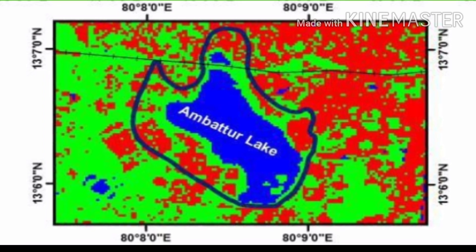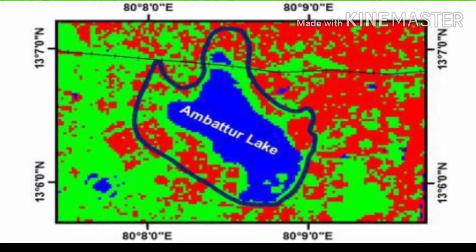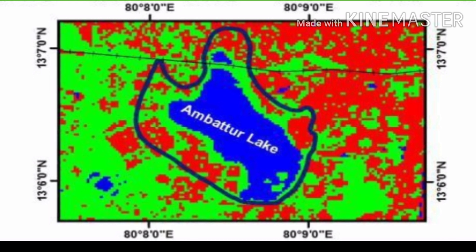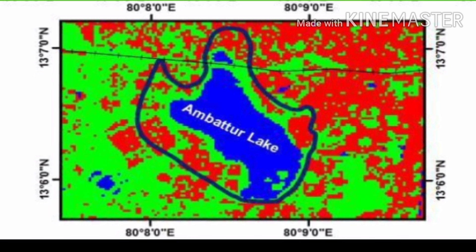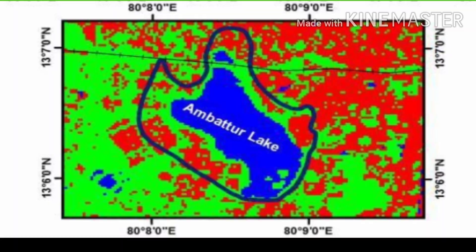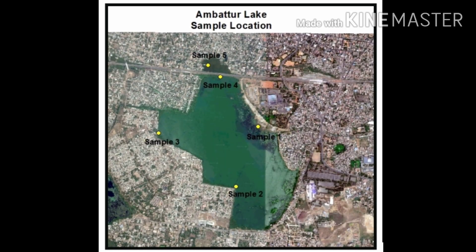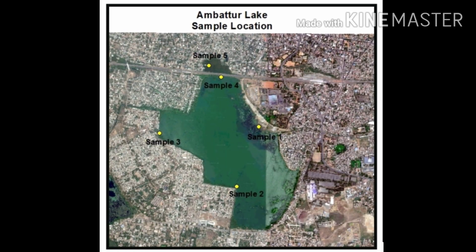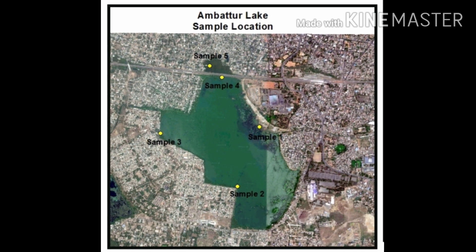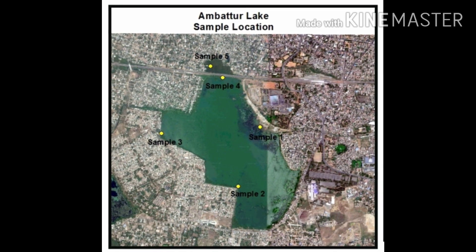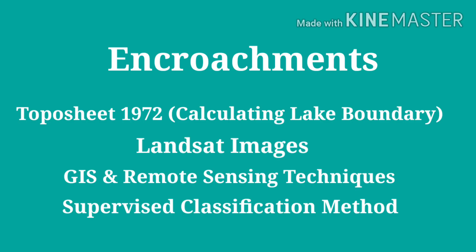To analyze further, the total lake area was calculated using topo sheets, which will be further helpful for calculating the encroachments. We have also collected five water samples from various locations, which will lead us to the impact of urbanization on surface water. Study of encroachment requires methods and data like topo sheets and Landsat images, which will be examined using GIS and remote sensing techniques.